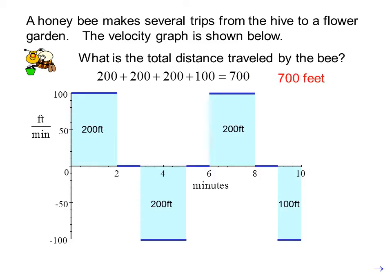What is the total distance traveled? It is 200 plus 200 plus 200 plus 100 equals 700, or 700 feet.